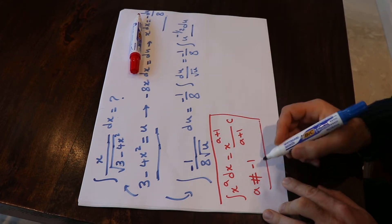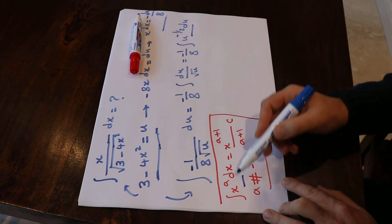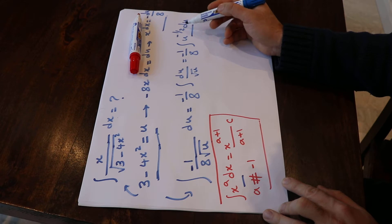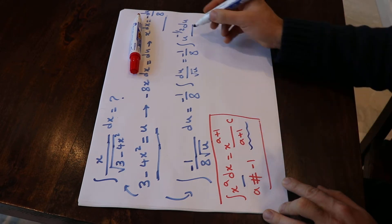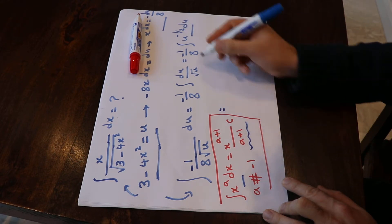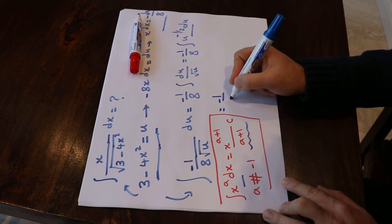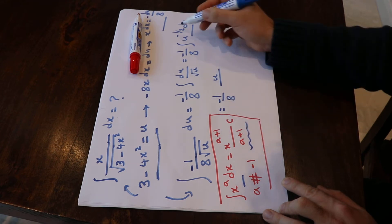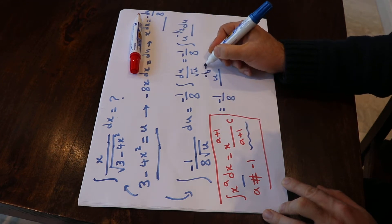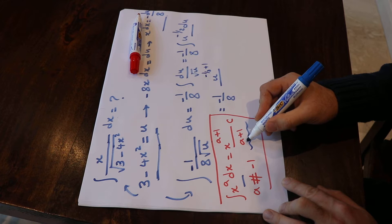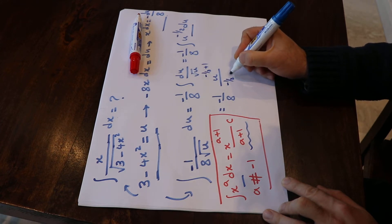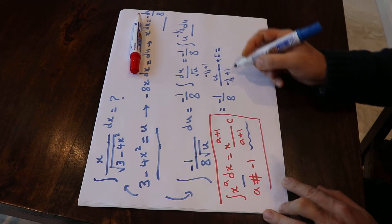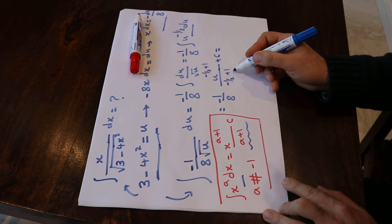If you compare this integral with that formula, you see they have the same format, and a in this case is minus 1/2. That means you can use this formula, which gives minus 1/8 times u to the power of (minus 1/2 plus 1), divided by (minus 1/2 plus 1), plus C. Since minus 1/2 plus 1 equals 1/2, we proceed accordingly.